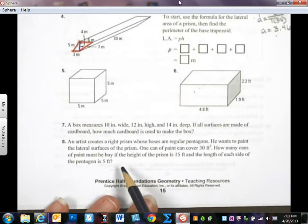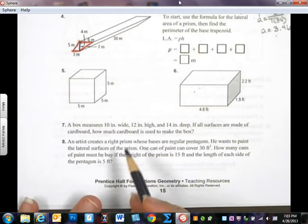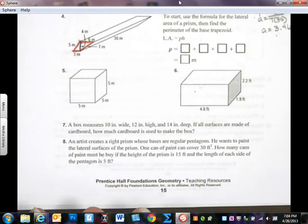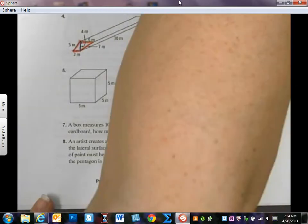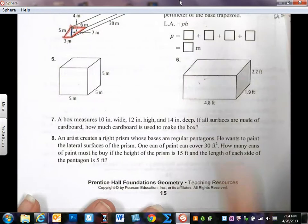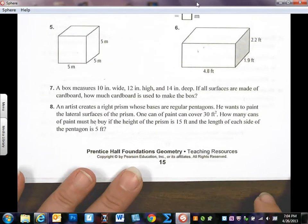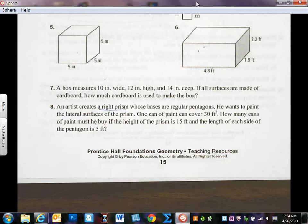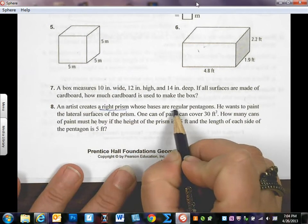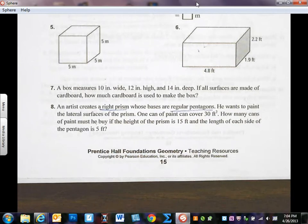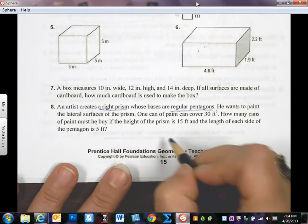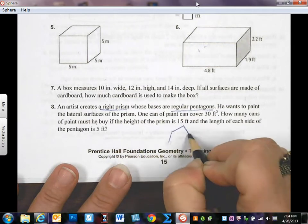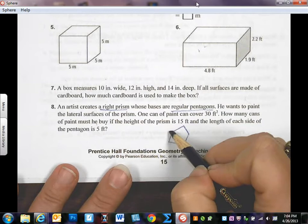But I wanted to come down and look at number 8, because I think this is a great question. It's a great question because it requires you to think about the types of questions you're going to have on the SOL. So I'm going to zoom in a little bit here on this, just because I think you can see it a little bit better. Notice he creates a right prism, whose bases are regular pentagons.